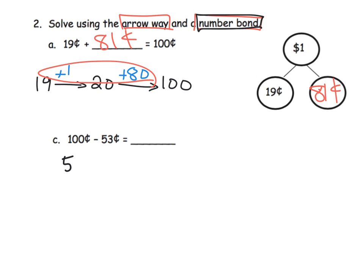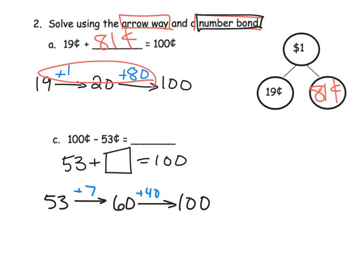When we see a subtraction, we want our students to understand that could be thought of as an addition with a missing addend problem. So 53 plus what gives us 100? We're going to add 7, that bumps us up to 60, then we can add 40 and that gets us straight to our dollar, 100 cents.